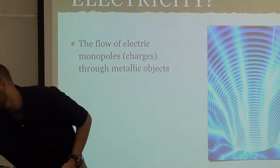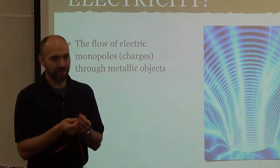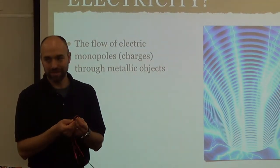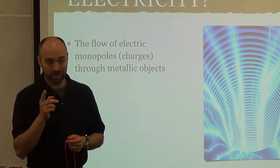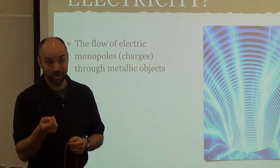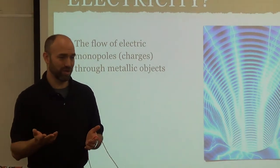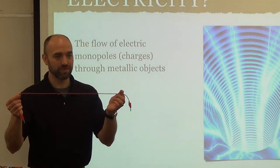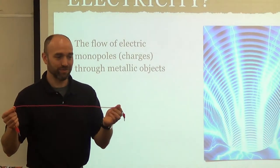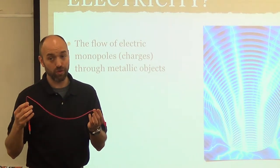And it flows through metal. This is why wires, if you cut them open, what are they made out of on the inside? Copper. Electricity flows much better through gold. Gold is a wonderful conductor. Why don't we have gold wires? It's very expensive.